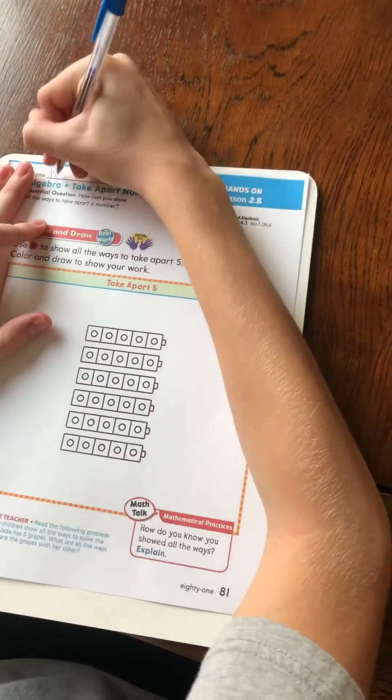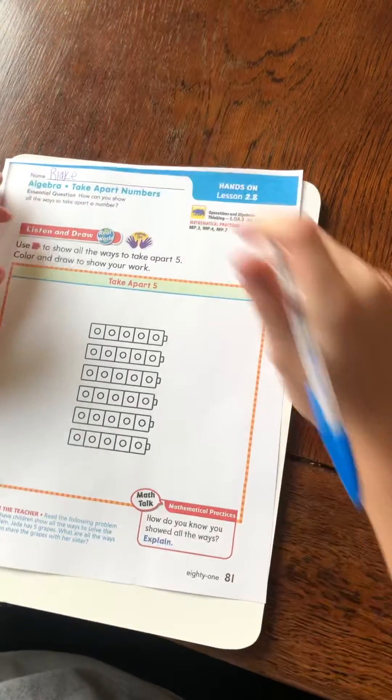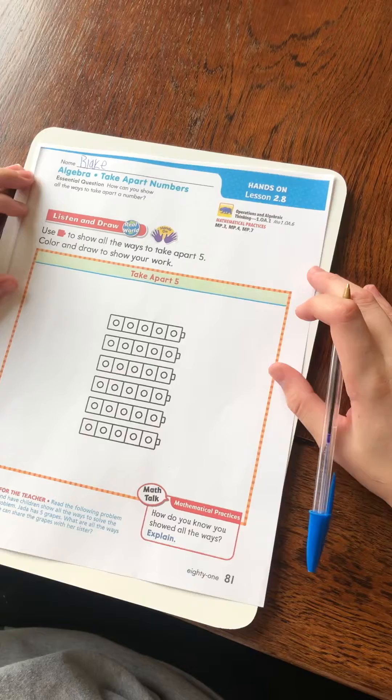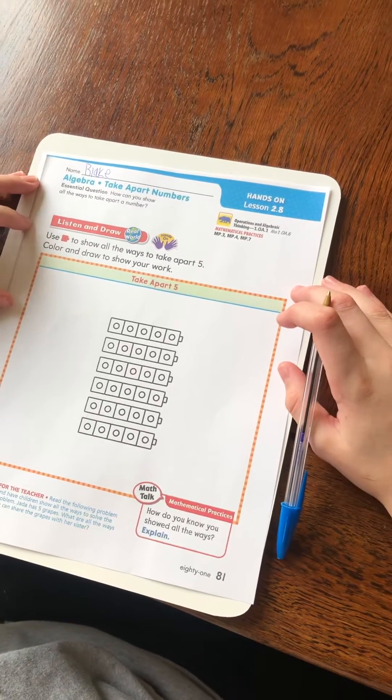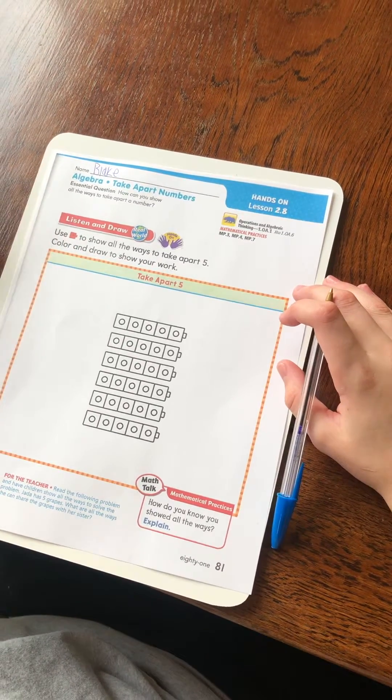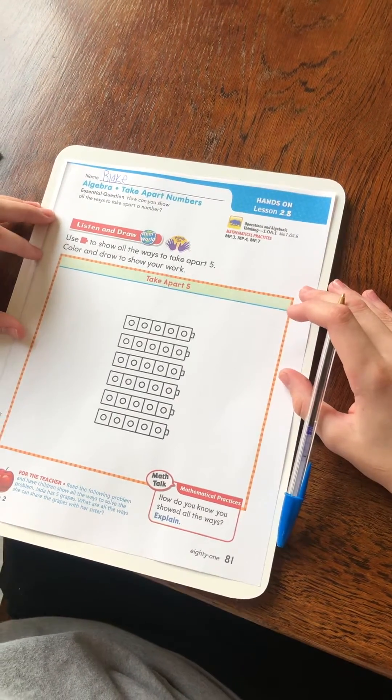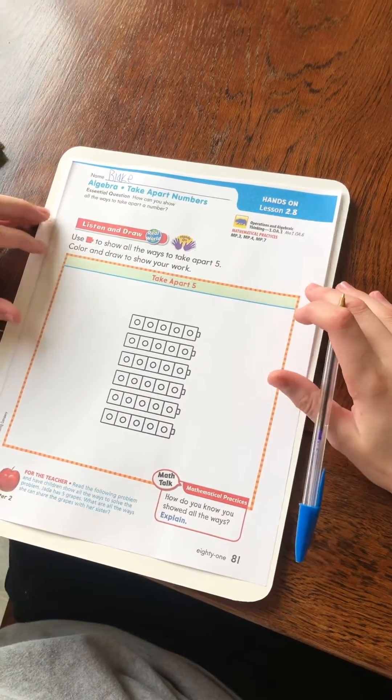So the first thing I do is write my name. And the central question is, how can you show all the ways to take apart a number? So our directions say, use number blocks to show all the ways to take apart five. Color and draw to show your work.